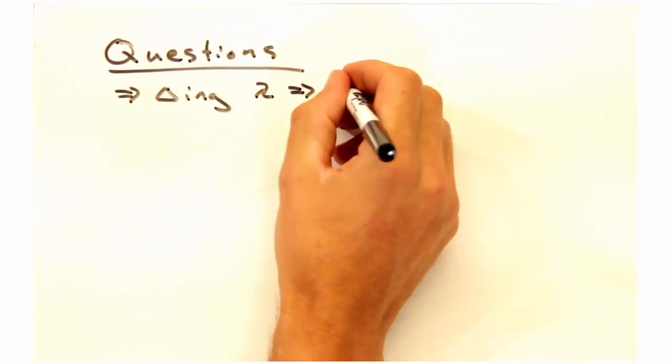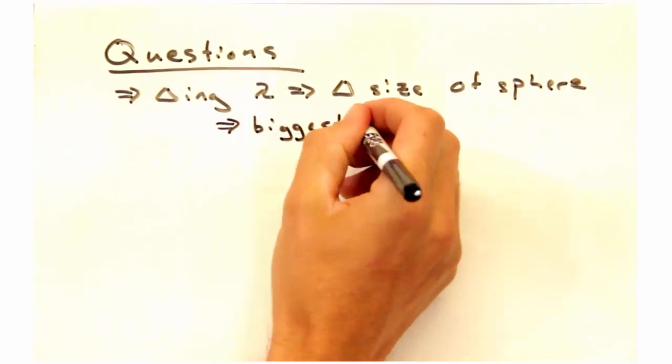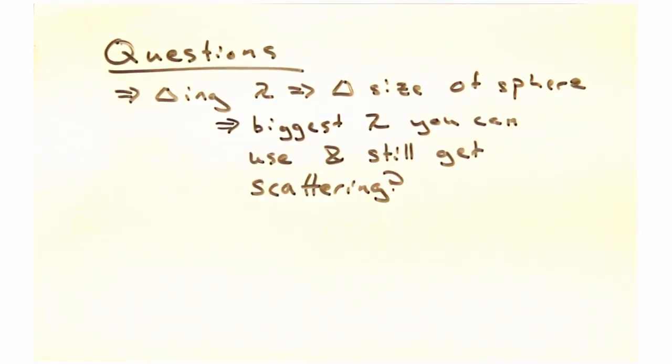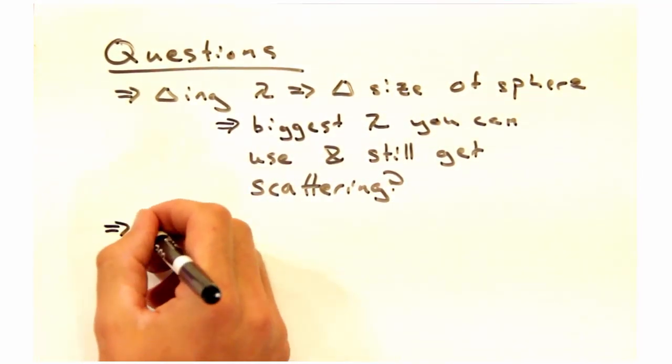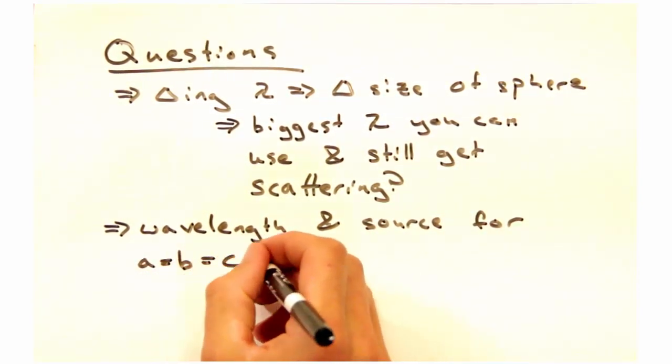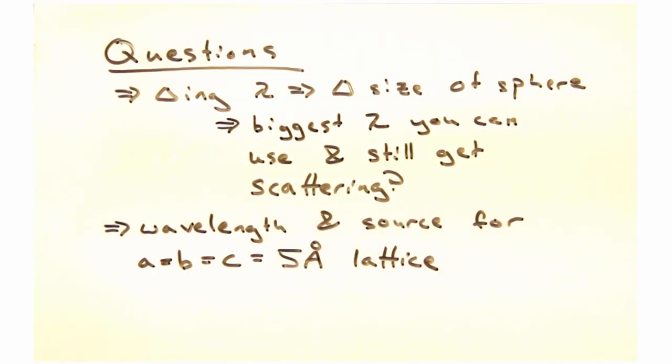First, we mentioned before how changing the wavelength of the source can change the size of the Ewald Sphere. What is the biggest wavelength you can use and still get scattering? And what wavelengths and corresponding sources would you expect for diffraction of single crystals with real space lattice spacing of about 5 angstroms?